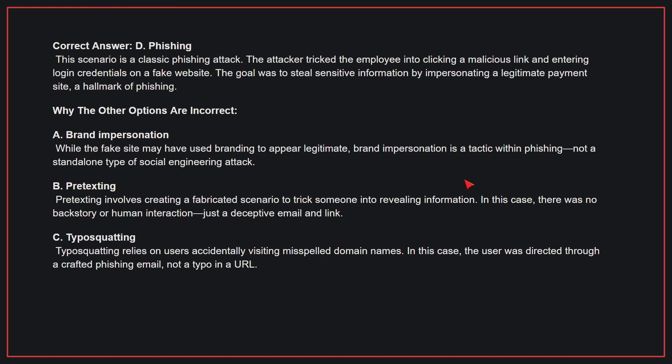Why the other options are incorrect? A: Brand impersonation. While the fake site may have used branding to appear legitimate, brand impersonation is a tactic within phishing, not a standalone type of social engineering attack. B: Pretexting. Pretexting involves creating a fabricated scenario to trick someone into revealing information. In this case, there was no backstory or human interaction, just a deceptive email and link.